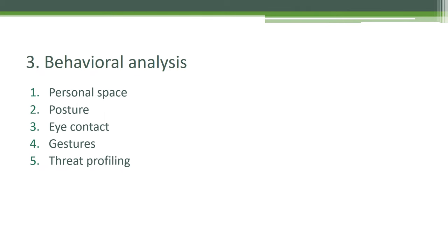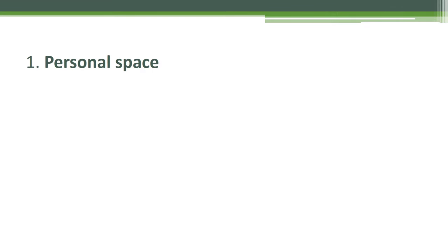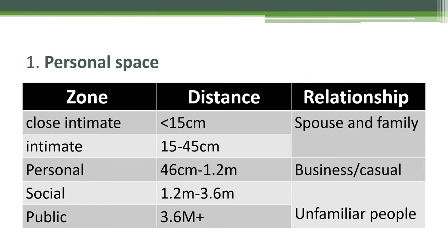We can identify people's behavior through their personal space, posture, eye contact, and gesture. When you find anything suspicious, you have to make a profile of the incident or the person — this is threat profiling. Personal space: people maintain a space when talking or doing something. Identifying a person's space helps determine their relationship. The close intimate zone is less than 15 cm, for spouses and family. The intimate zone is 15 cm to 45 cm, also for spouses and family members.